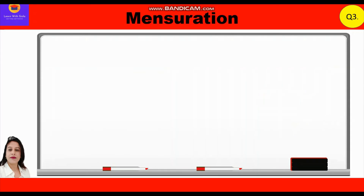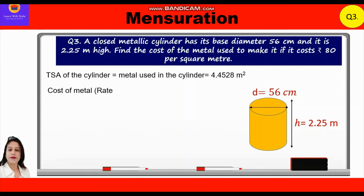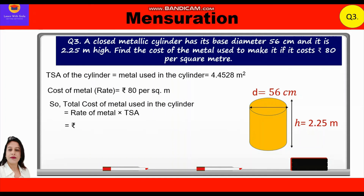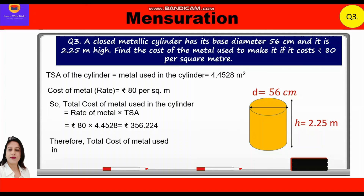The cost of metal is ₹80 per m². So total cost = 4.4528 × 80 = ₹356.224, which is approximately ₹356. Hope you have understood all these questions. Thank you everyone.